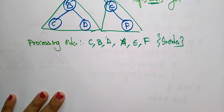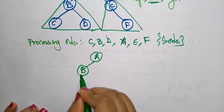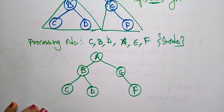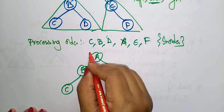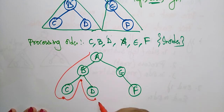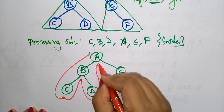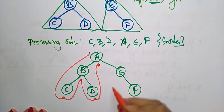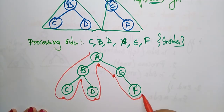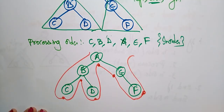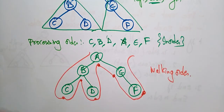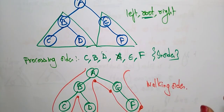To summarize the working order: first visit the left subtree node, then the root node, then the right node. Come to the right subtree — if there is no left, visit the root node then the right node and go back. This is the working order of in-order binary tree traversal. Thank you.